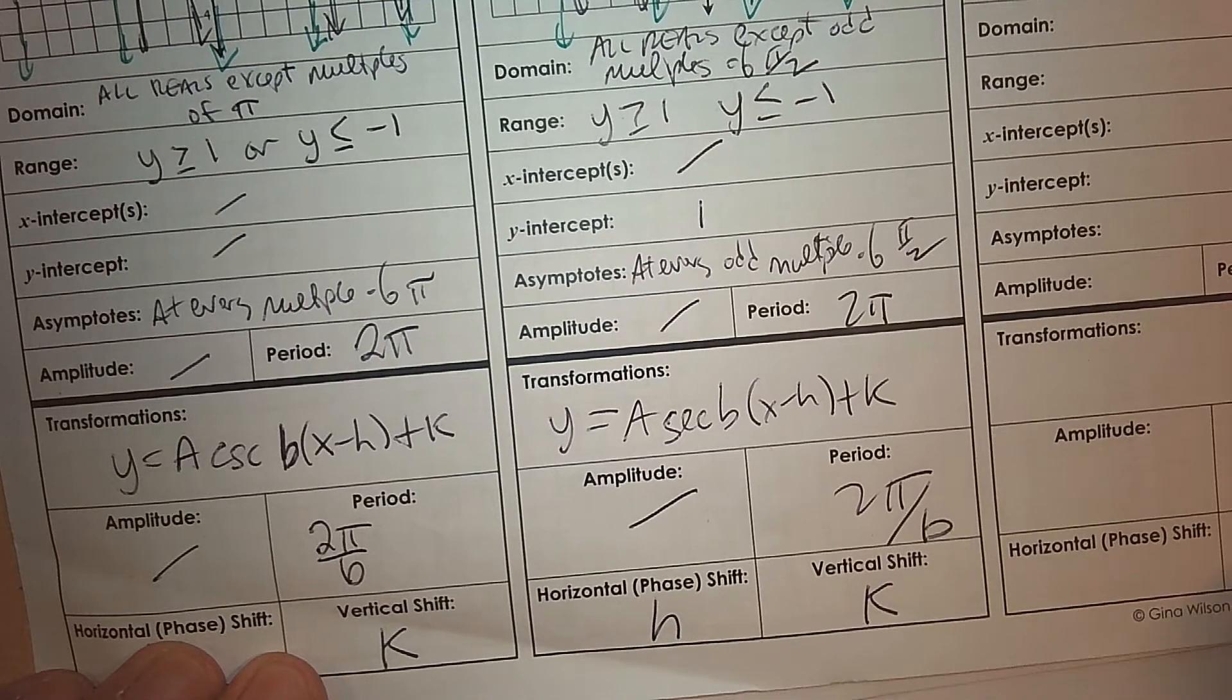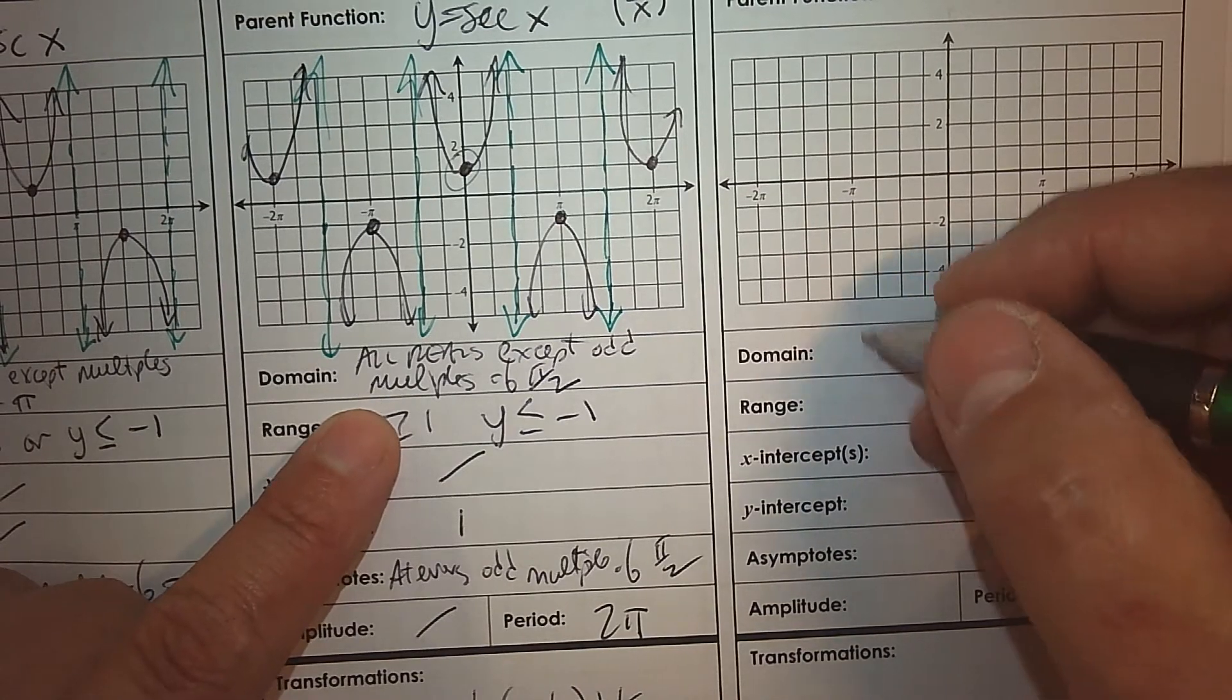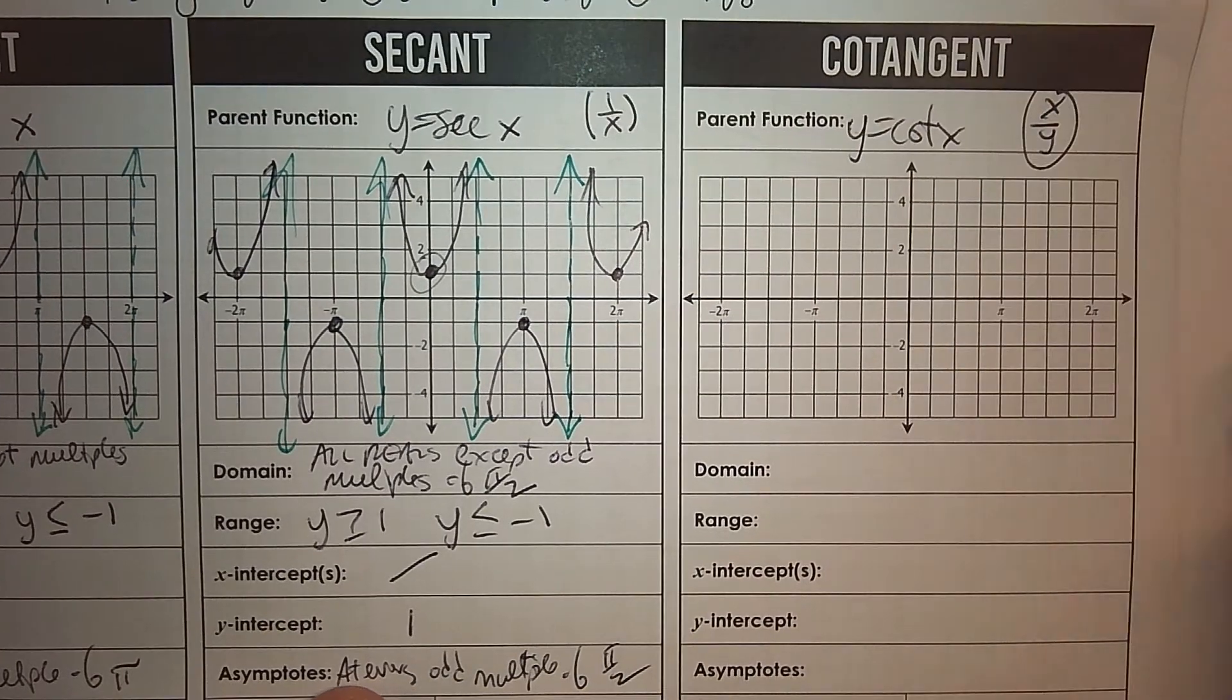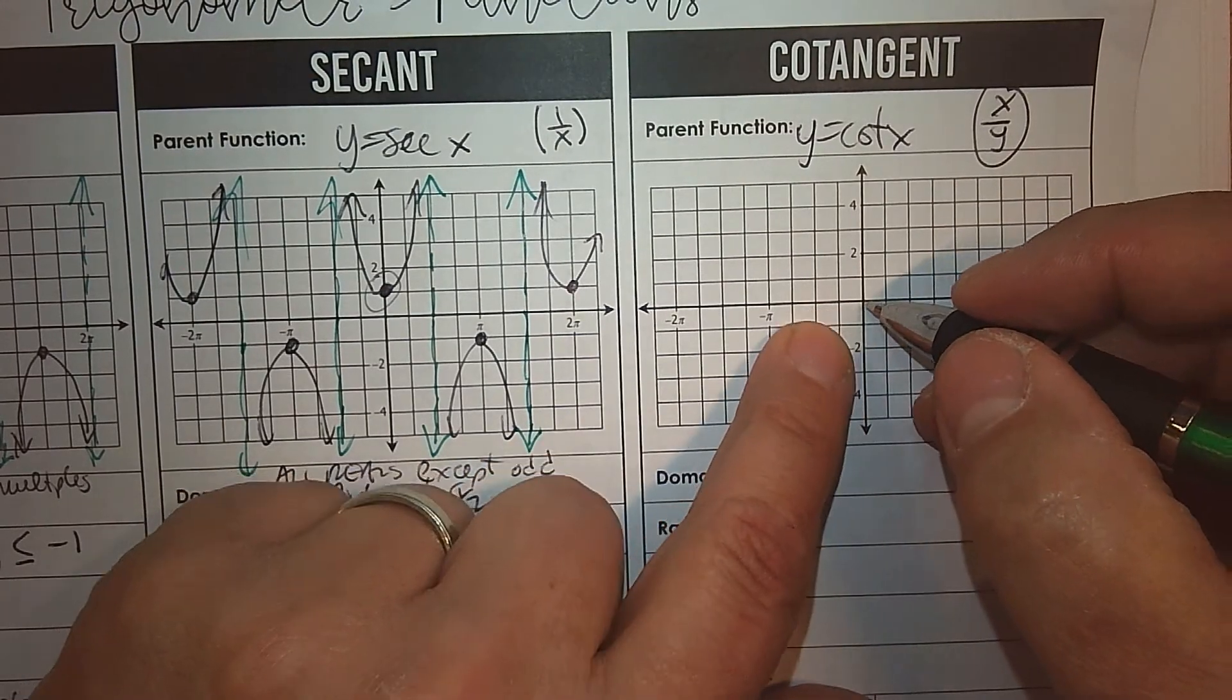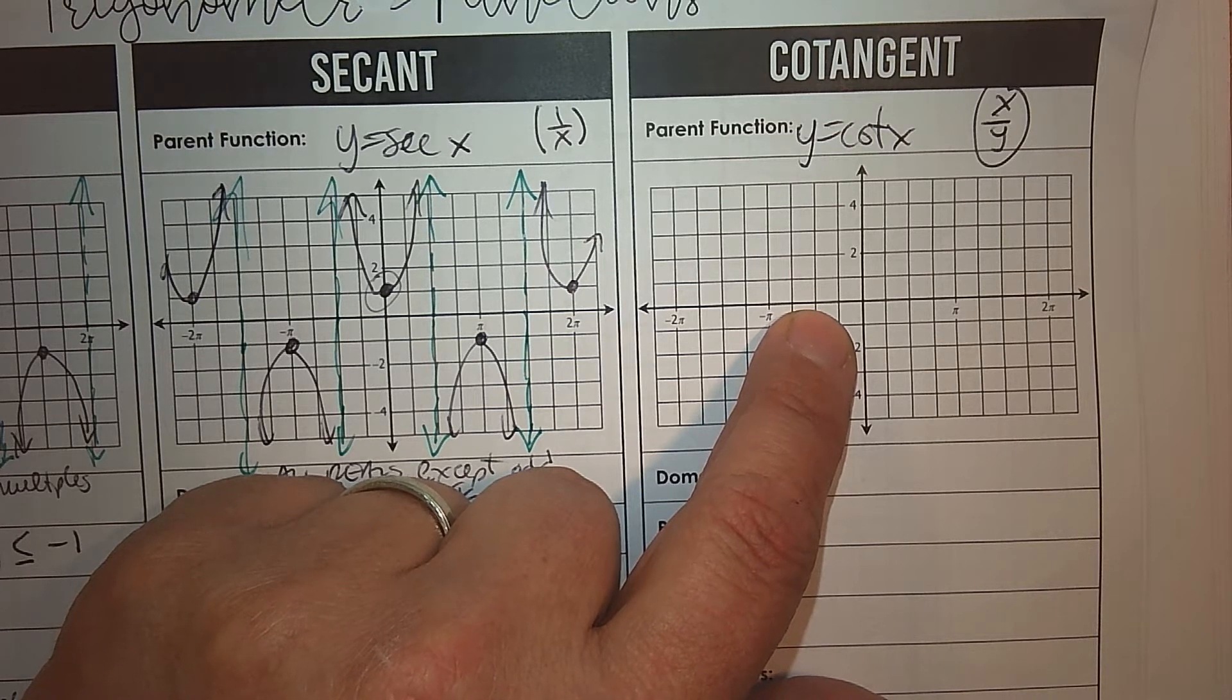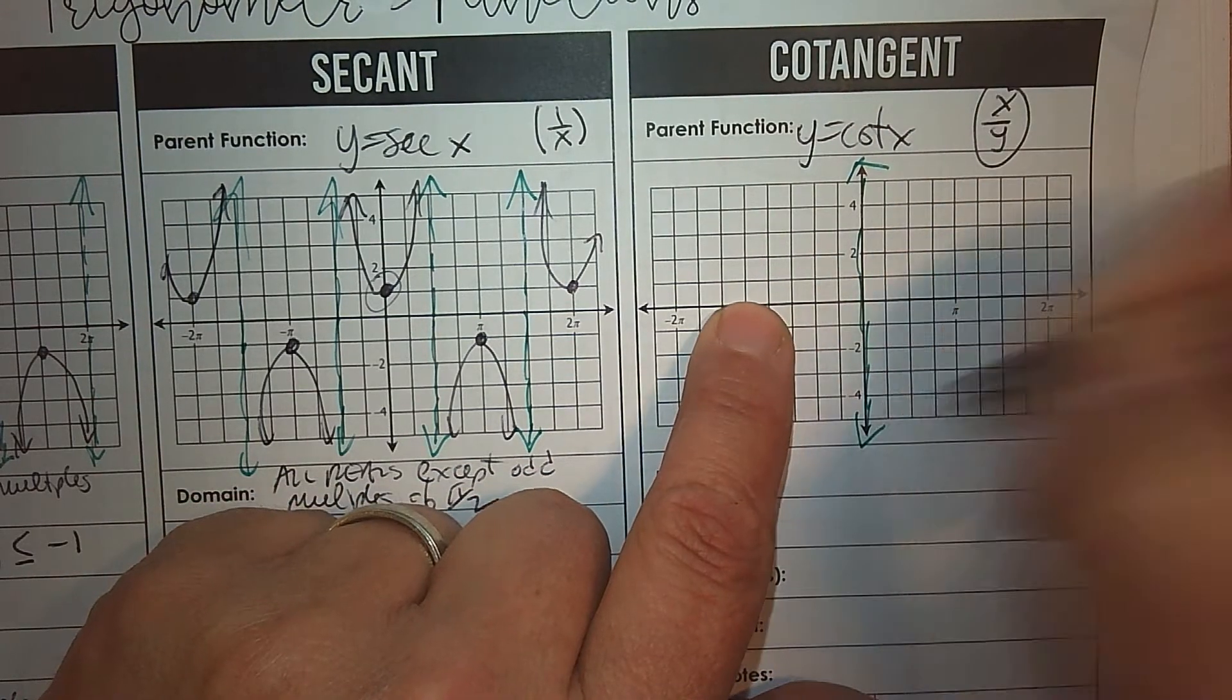All right, last one here, cotangent. So again, the definition here, here is the parent. The definition is x divided by y. So we need to know the rule when we graph it. So at 0 radians, when you go x divided by y, that's going to be 1 divided by 0. So that means it is undefined. So at 0, we start with an asymptote.